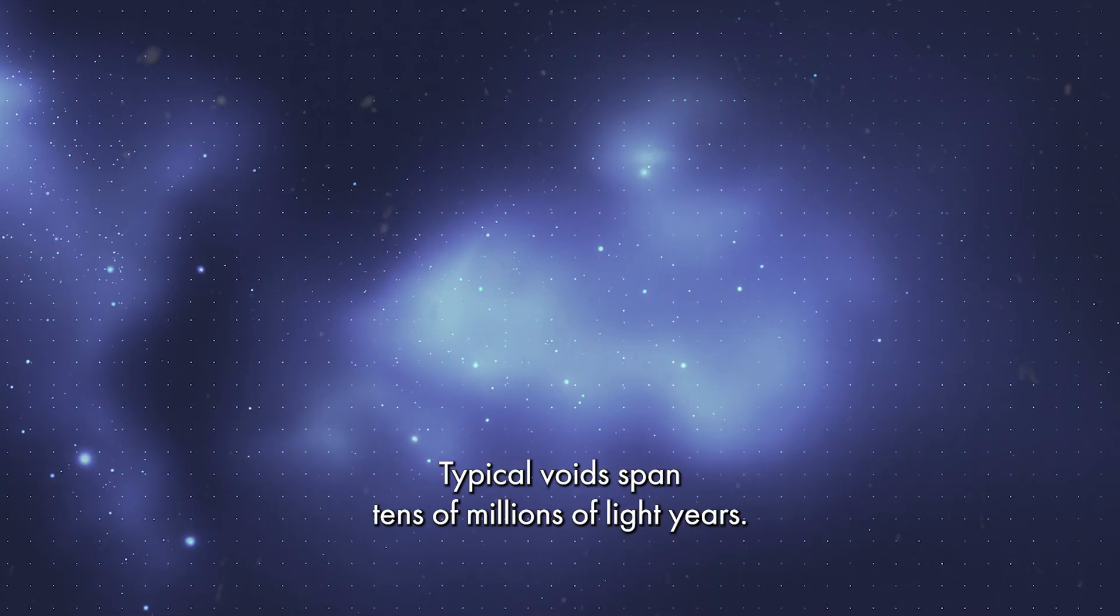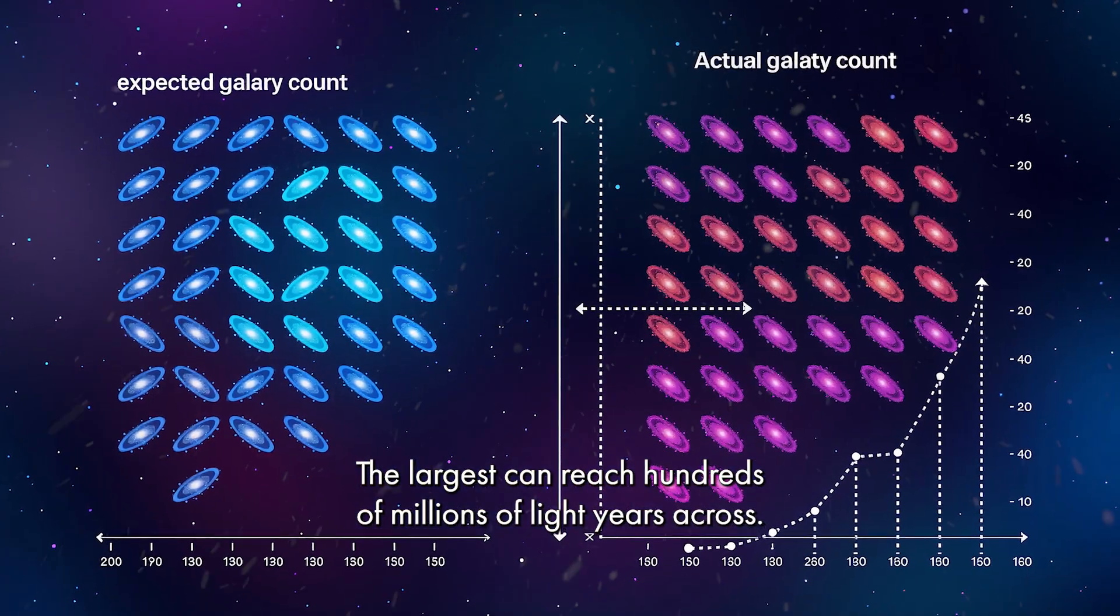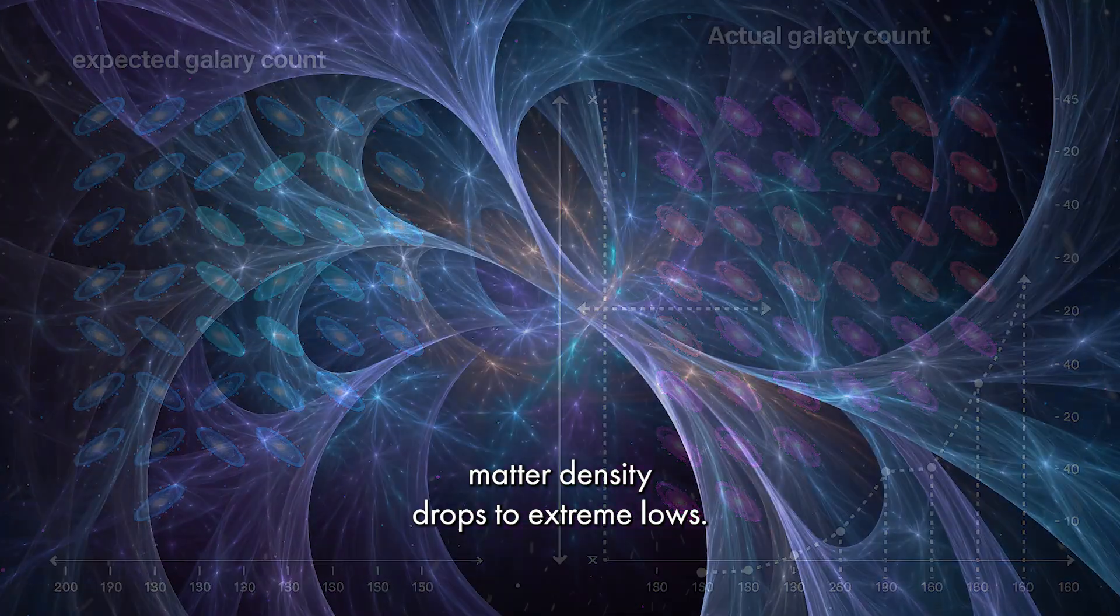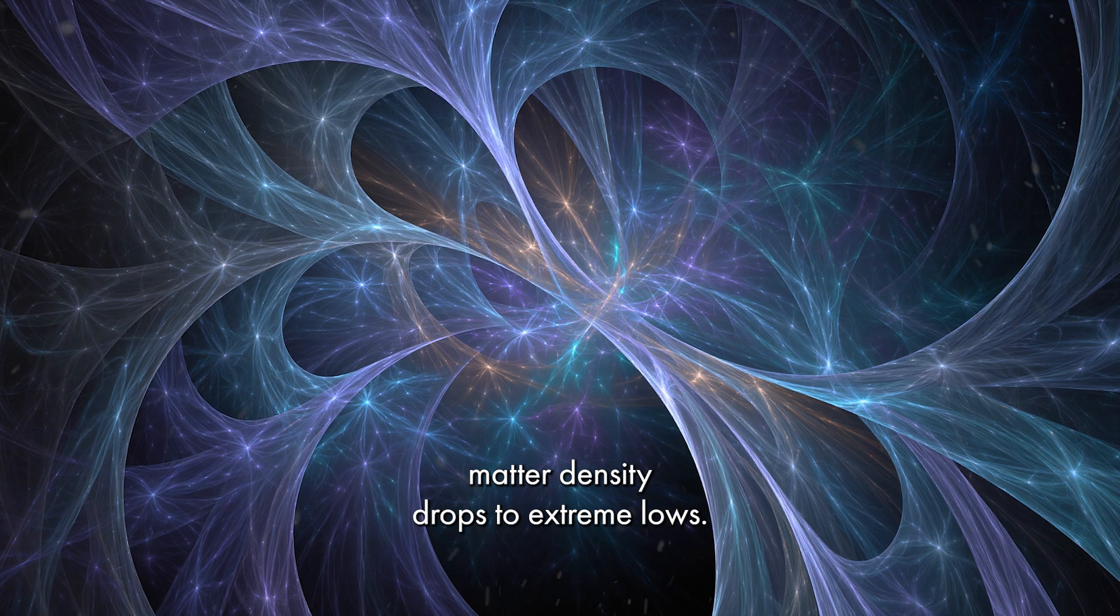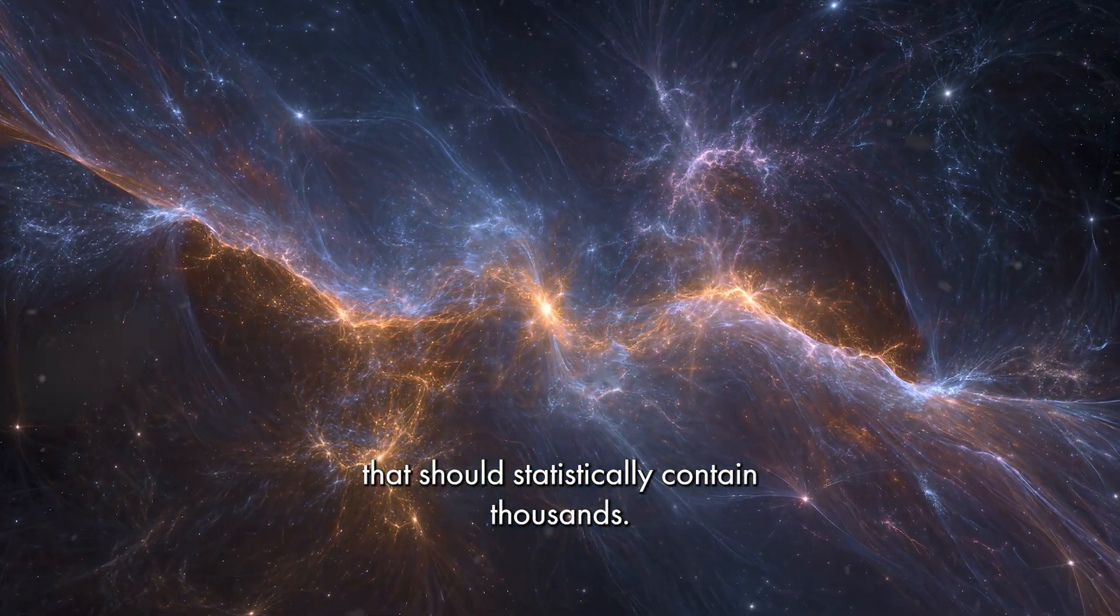Typical voids span tens of millions of light years. The largest can reach hundreds of millions of light years across. Within these regions, matter density drops to extreme lows. Only a handful of galaxies occupy volumes that should statistically contain thousands.